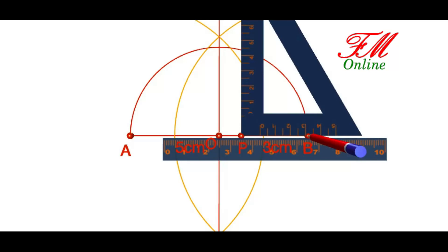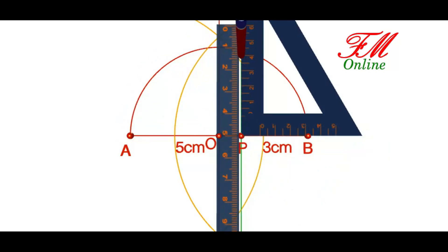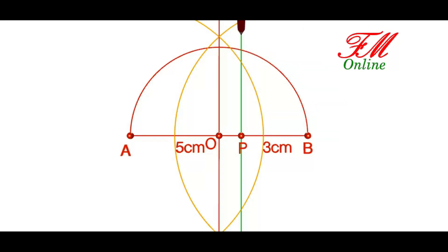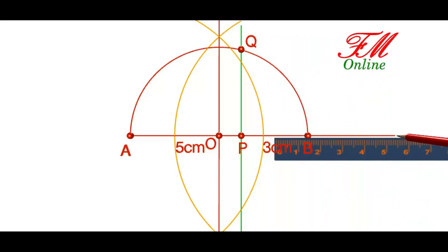Draw a perpendicular line of AB from P. Mark Q on the intersecting point of that line with the circle. Now PQ is root 15. The length of PQ is root 15.